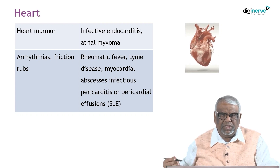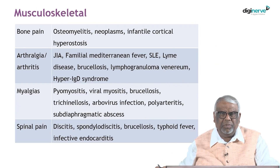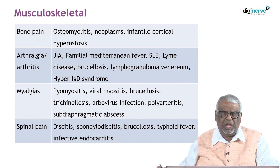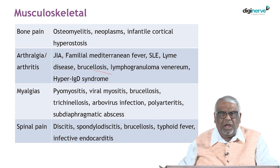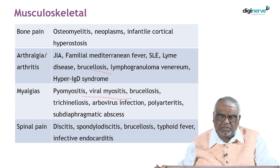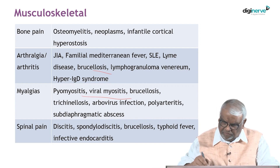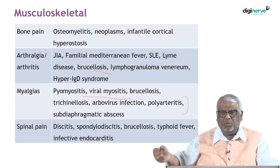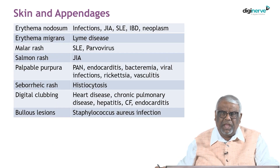Pericardial effusion may be present if friction rub is found. Musculoskeletal signs include bone pain, which can occur in bone infections, or arthralgia and arthritis in collagen vascular disorders and infections such as brucellosis. Hepatitis B can also present with arthralgia or arthritis of small joints. Myalgia can occur in polymyositis, viral myositis, brucellosis, and vasculitis syndromes. Spinal pain can be seen in brucellosis, typhoid fever, spondylodiscitis, or discitis.